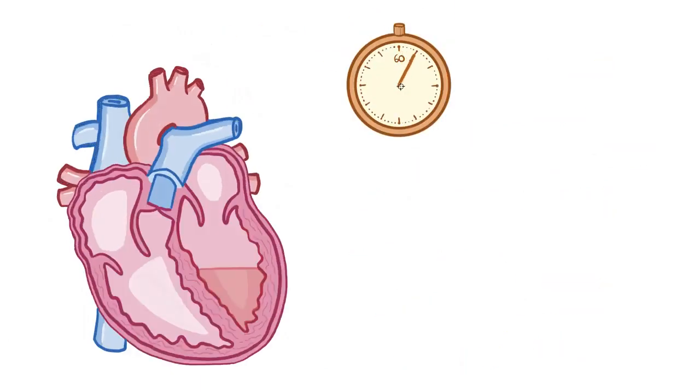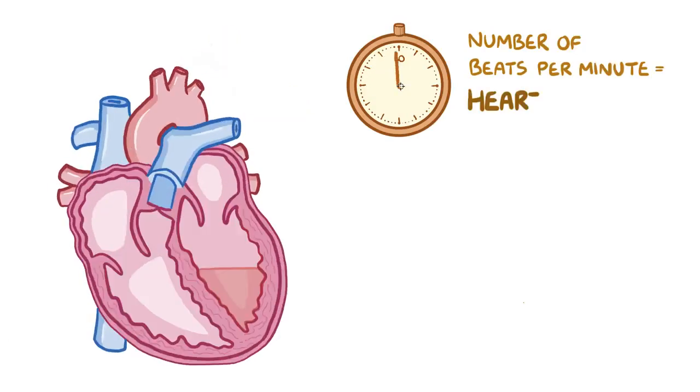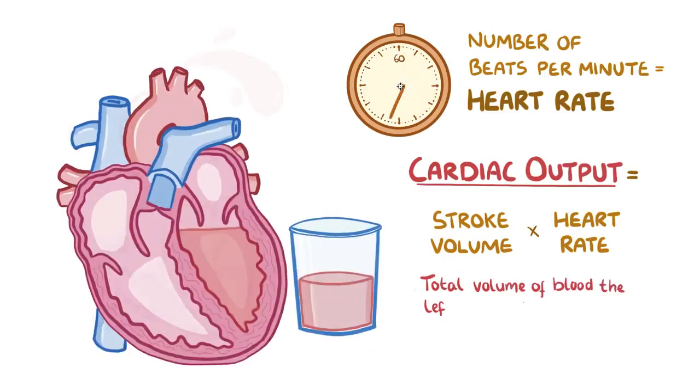Every minute though, our heart beats many times. The exact number of beats per minute is known as the heart rate. If we multiply the stroke volume times the heart rate, we'll get the cardiac output, which is the total volume of blood that the left ventricle ejects in one minute.